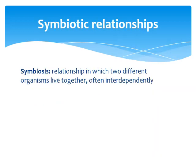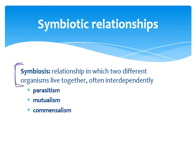Now we're going to talk about symbiotic relationships — basically relationships in which two different organisms live together, often interdependently. This is really important when looking at community ecology and how different populations within a community interact. There are three different forms of symbiosis: parasitism, which is not beneficial; mutualism, which is beneficial to both; and commensalism, which is beneficial to one and doesn't harm the other. Symbiosis can be both positive and negative.